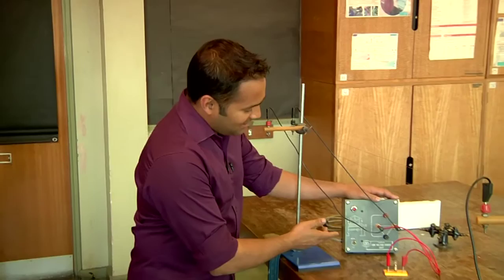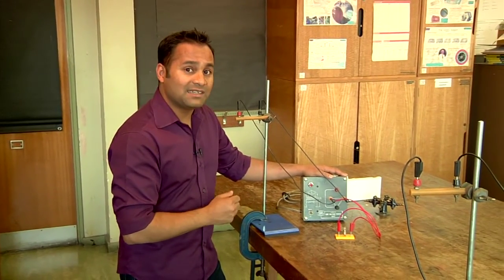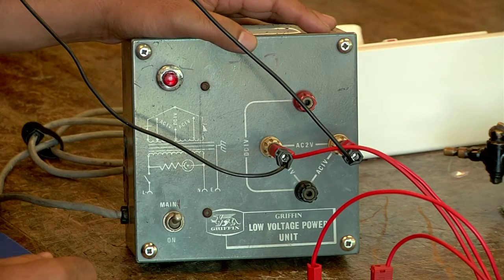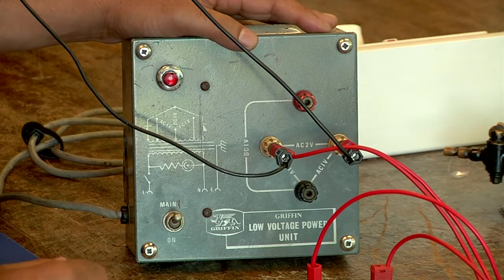Now you can buy specialist apparatus to do this, but I'm using equipment that you should already have in your lab. What I've got here is a low voltage alternating current power supply. It provides a fixed output of about two volts.